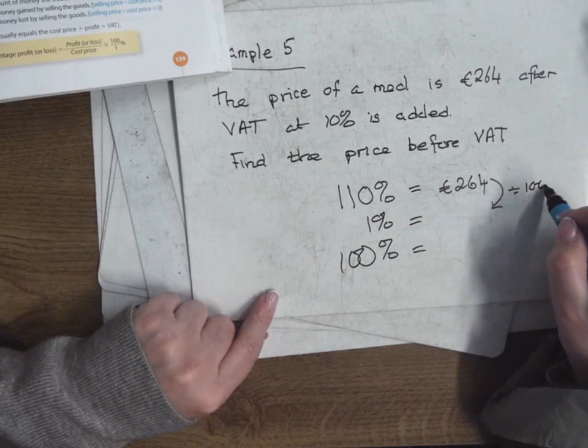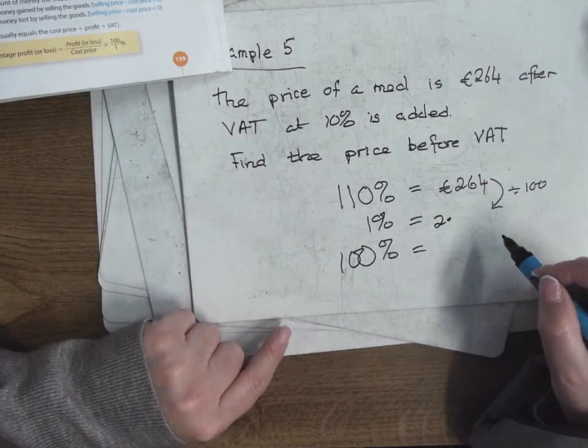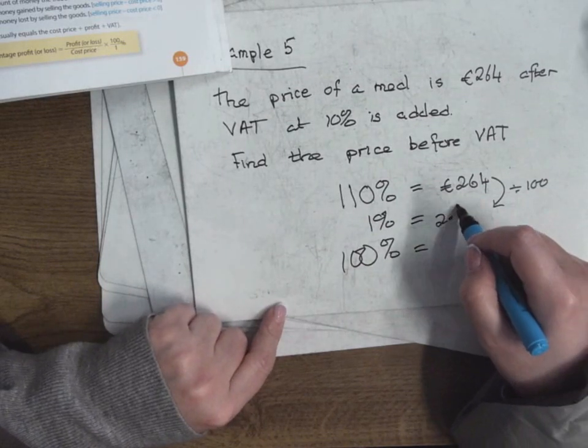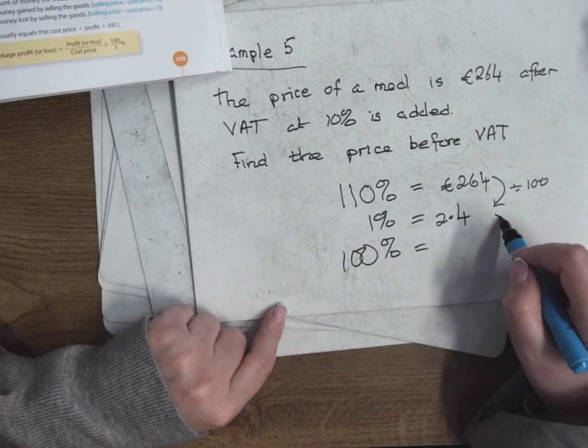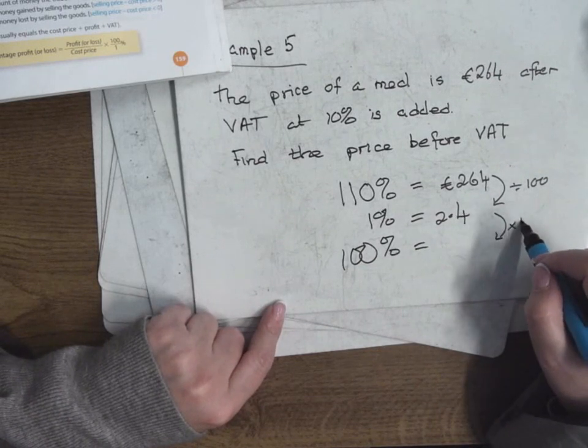Divide by 110. Someone might do that for me in the calculator. Get 2.4. And how do I go up to 100%? Multiply by 100.